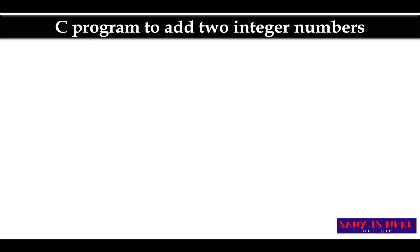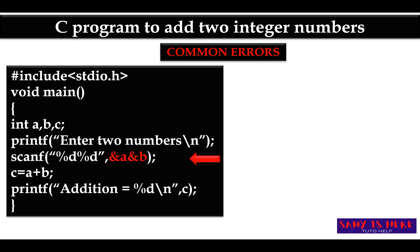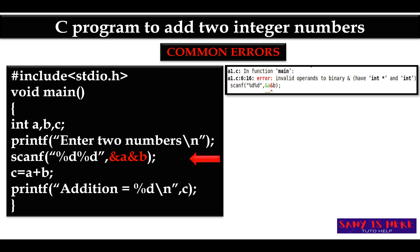Another very common mistake among beginners: when reading two integers with scanf, you are storing the first integer in &a and the second in &b, but you must write a comma between them — '&a, &b'. If you forget the comma, it shows 'invalid operands' and marks the error towards that character.